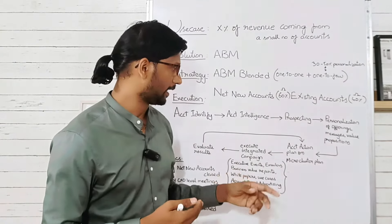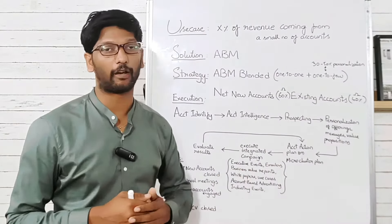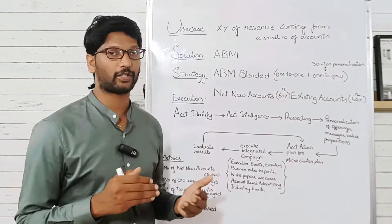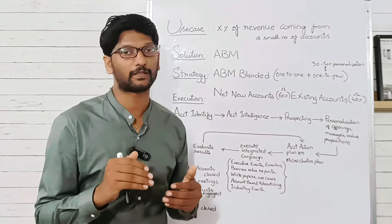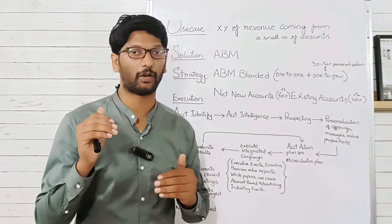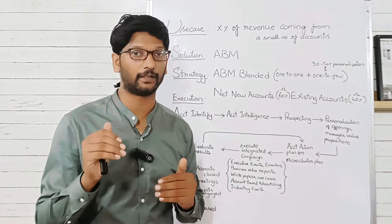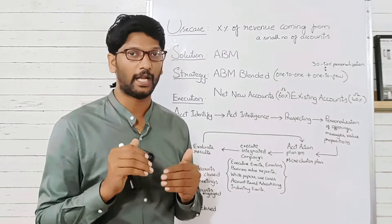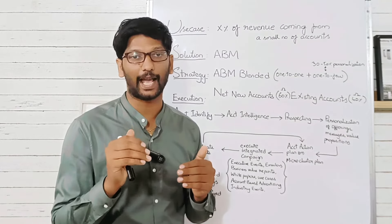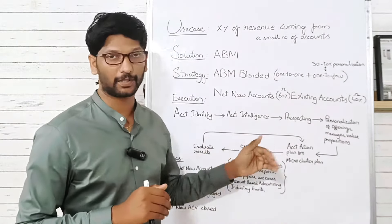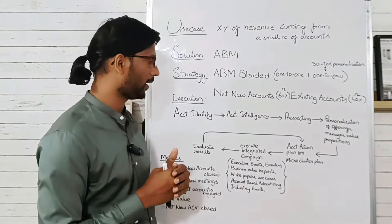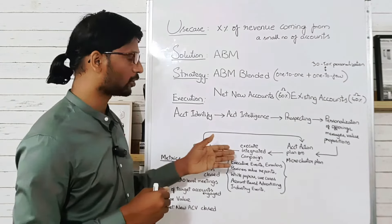After developing personalized messages, value propositions, and content, you will go on to developing an account action plan. For ABM Strategic, each and every account will have a separate account action plan. For ABM Light, accounts are clubbed into micro clusters, and each micro cluster will have its own action plan. You'll also develop an integrated campaign plan alongside these action plans.